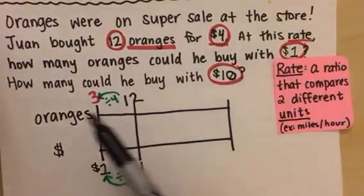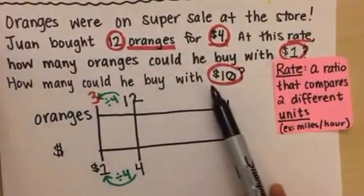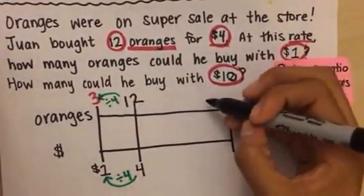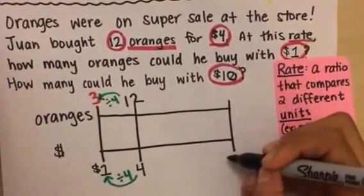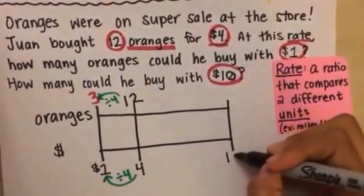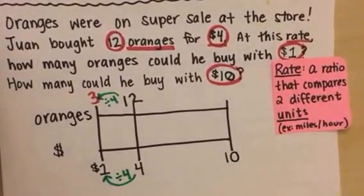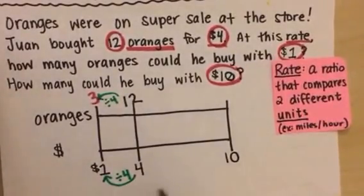All right, so we have the first part of our problem solved. Let's go ahead and solve the second part. How many could he buy with ten dollars? I'm going to go ahead and fill that in on my double number line, and because it's dollars, it's going on the bottom number line.